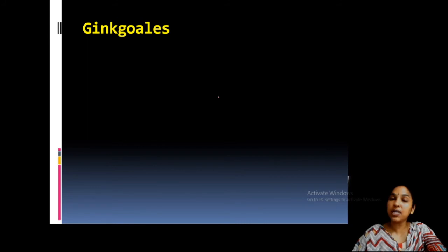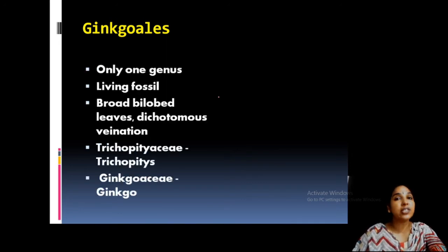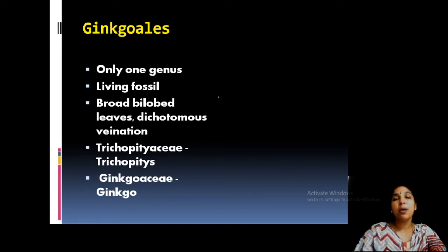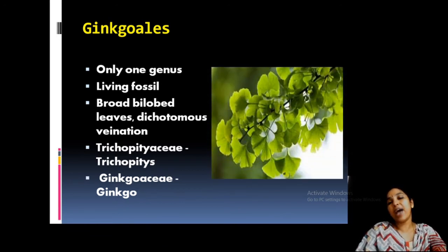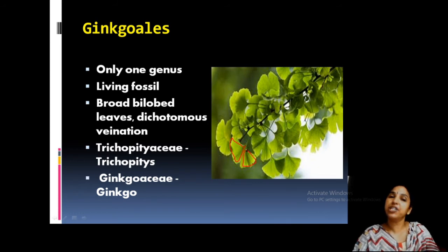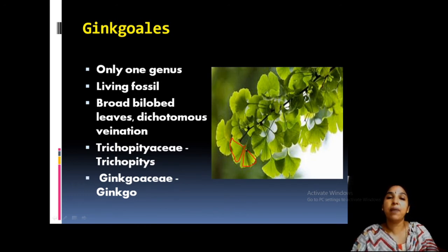Ginkgoales is also a living fossil with only one genus, Ginkgo biloba. It is also known as the maiden hair tree — not to be confused with the maiden hair fern Adiantum. The leaves are bilobed with dichotomous venation. The family Trichopityaceae is fossilized and Ginkgoaceae is living. The fan-shaped bilobed leaf with dichotomous venation is very important. This plant is usually grown in China, used as an avenue tree and is a pollution indicator.